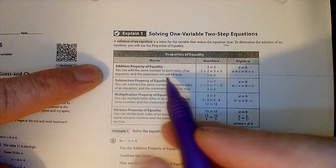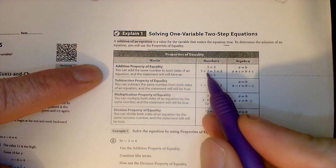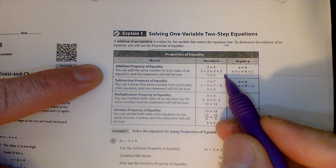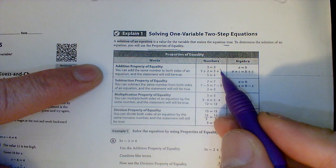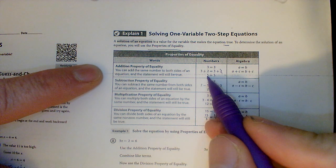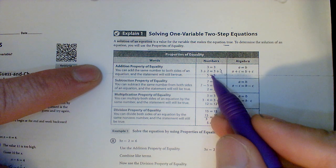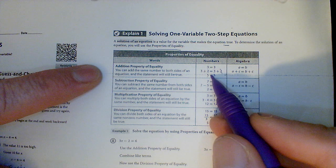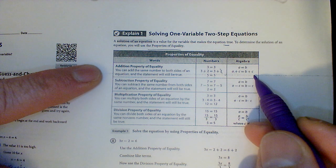So look, addition property literally says this. You can add the same number to both sides of an equation. That means the left side of the equal sign and the right side of the equal sign. If 3 equals 3 and I add 2 to both sides, then it's still equal. 5 equals 5 because I did the same thing to both sides. The values now are always equal. If I have A equals B, if I add C to both sides, it's still equal.